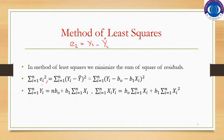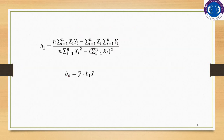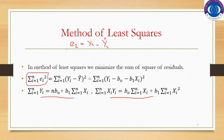We differentiate this summation of ei squared with respect to b0 and equate it to 0, then differentiate it again with respect to b1 and equate it to 0. As a result, we get two normal equations — two equations, two unknowns. By simplifying these, we get the value of b1 and b0. This is the way to estimate b1 and b0 using the method of least squares. This is the way to find out the estimates of the unknown parameters using the method of least squares.